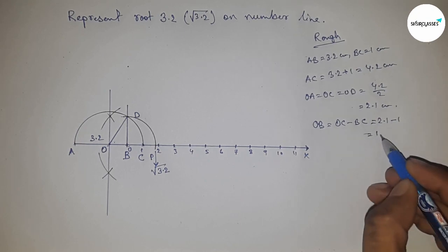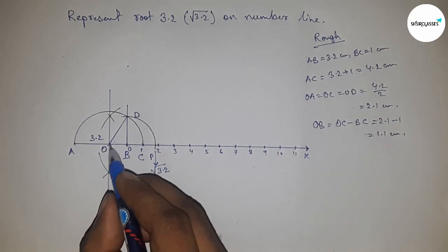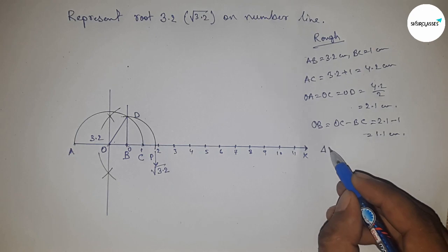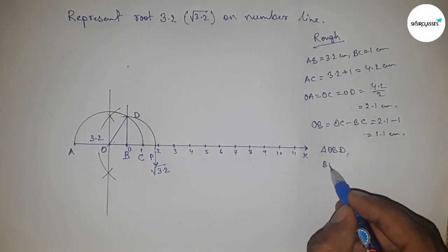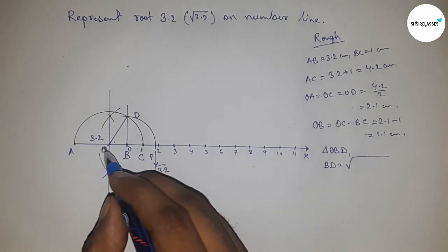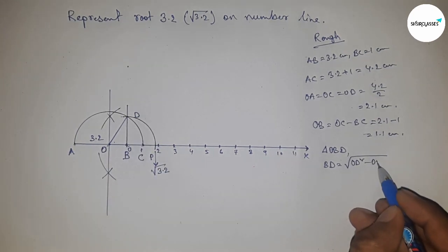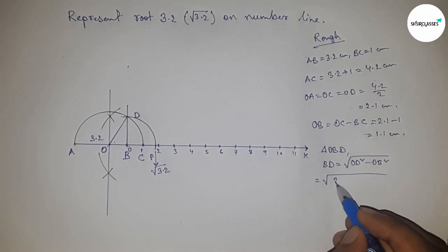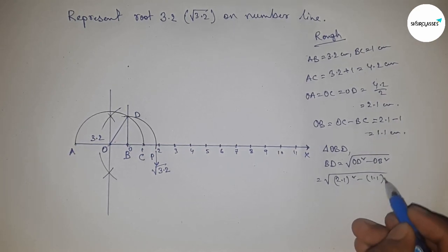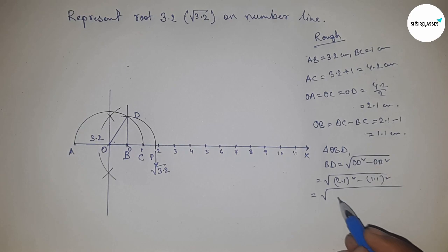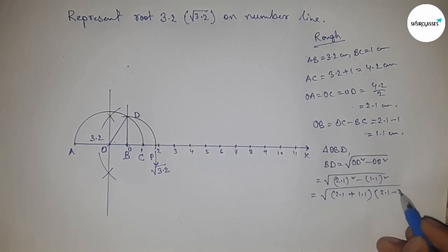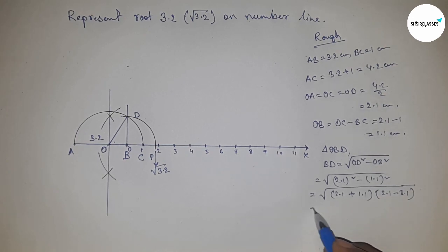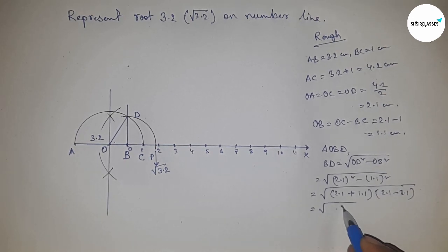From right-angled triangle OBD, by Pythagorean theorem, BD equals the square root of OD squared minus OB squared. Putting the values and applying the formula a² - b² = (a + b)(a - b), we get root 3.2 centimeters.